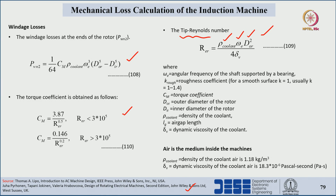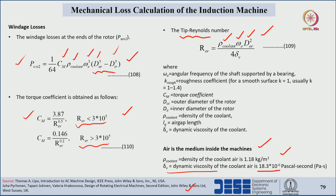After selecting the tip Reynolds number range, we calculate the torque coefficient, then substitute the torque coefficient, coolant density, angular frequency of the shaft, and the outer and inner diameter values of the rotor to calculate the windage losses at the ends of the rotor. Inside machines, air is the medium: coolant density is 1.18 kg/m³ and dynamic viscosity of air is 18.3 × 10⁻⁶ Pascal-seconds.